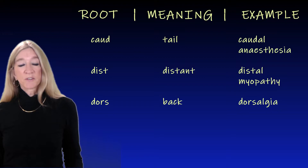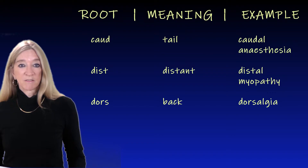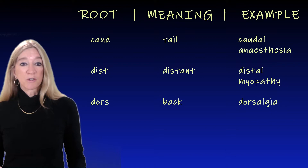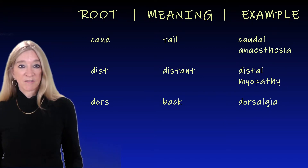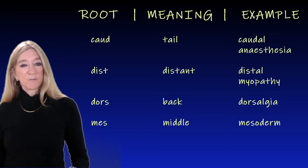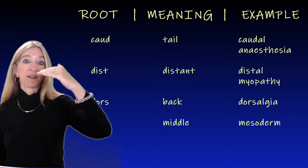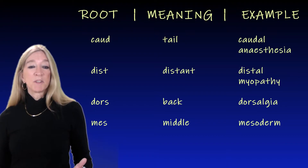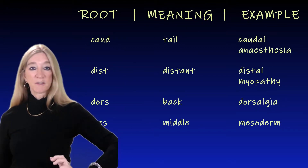The next root, 'dors,' meaning back. An example is dorsalgia, meaning back pain. This is the same 'dors' as in the word dorsal fin — the fin coming out of a shark's or a fish's back. The next root, 'mes,' meaning middle, as in mesoderm — the middle layer of the germ layers in the embryo, the others being the endoderm and the ectoderm. An example in real life is Mesoamerica, middle America between North America and South America.